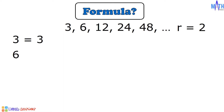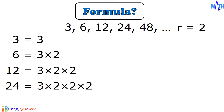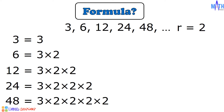3 is equal to 3. 6 is equal to 3 times 2. 12 is equal to 3 times 2 times 2. 24 is equal to 3 times 2 times 2 times 2. And 48 is equal to 3 times 2 times 2 times 2 times 2, where 3 is the first term and 2 is the common ratio.